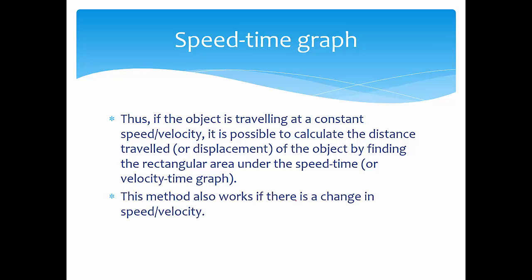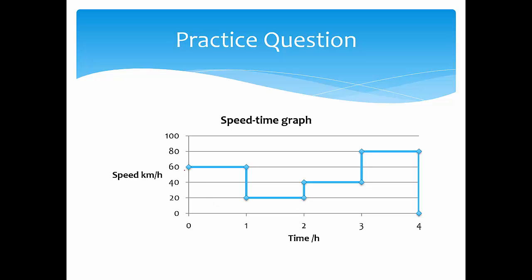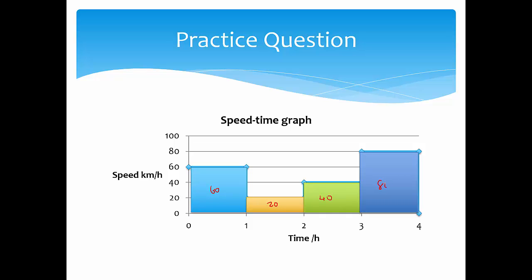This method also works if the speed changes at different times. For example, if the speed is 60 for the first hour, 20 for the second, 40 for the third, and 80 for the last hour, you calculate: 60×1=60, 20×1=20, 40×1=40, and 80×1=80. Adding them up gives 240. It is still the area under the graph, except the area differs for each hour.